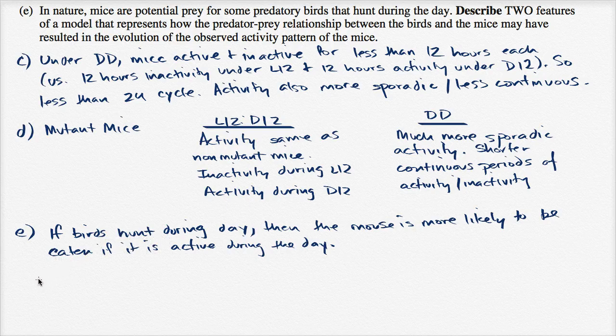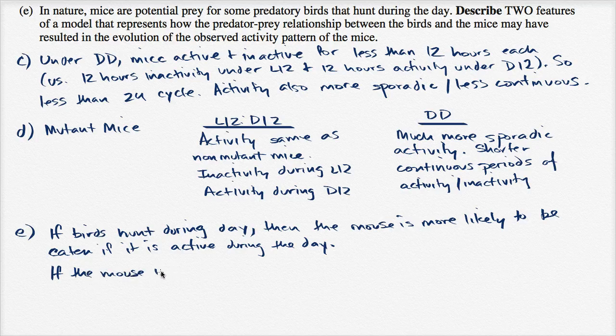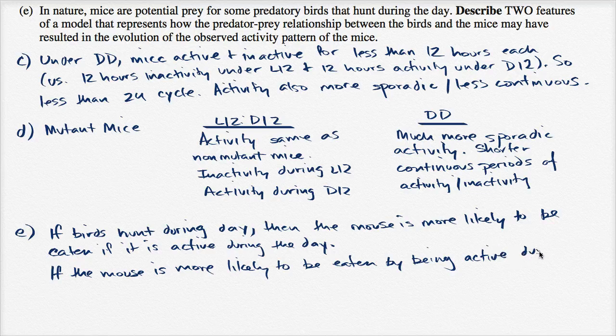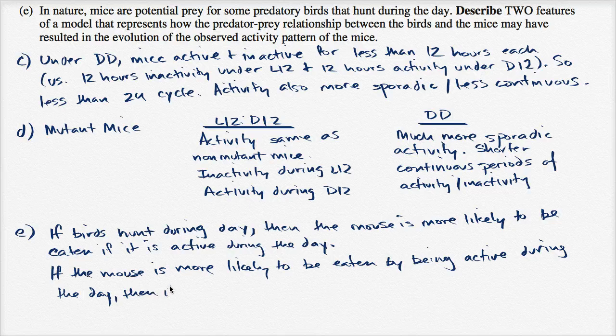And then the second one is, if you're more likely to be eaten, then you're less likely to reproduce. If, actually, that should be a capital I. If, if the mouse is more likely to be eaten if it is eaten by being active during the day, then it is less likely to reproduce. Then it is less likely to reproduce.